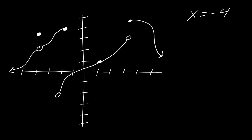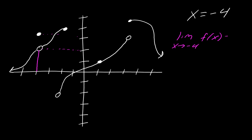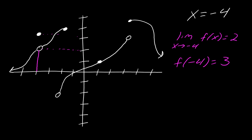What about x equals negative 4? Here's my x equals negative 4. Notice that the limit looks like it's approaching this point here, but the actual functional value is up here. So the limit as x approaches negative 4 of f of x equals 2, but f of negative 4 is equal to 3. This is a perfect description of what makes something not continuous — so this is discontinuous at this point.